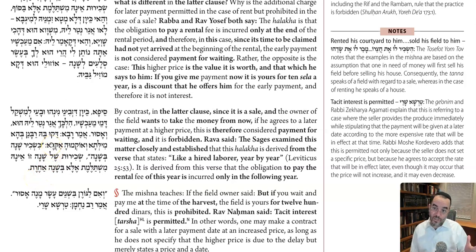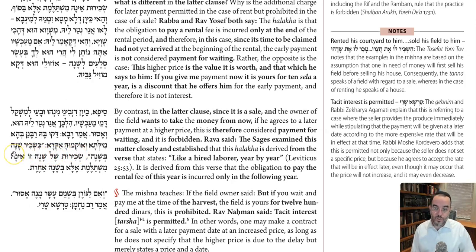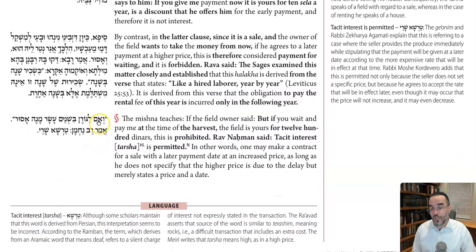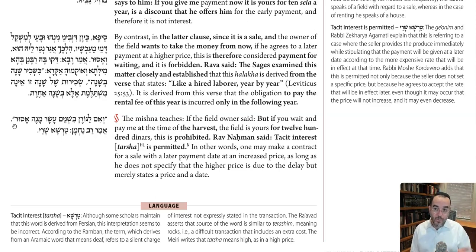The rabbis looked into this distinction and found a pasuk that backs it up: 'keskhir shana beshanah' — literally about a hired laborer, but the same word also means rental. 'Year by year' means the rental payment for using something this year does not have to be paid until the next year — so it's only at the end of the rental period that one has to pay. The Mishnah then says that in the case of a sale, offering 1,200 for later payment vs. 1,000 now is prohibited — however, there is a way around this.